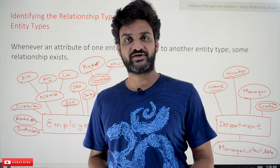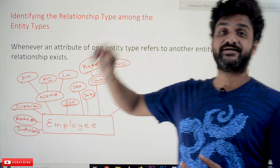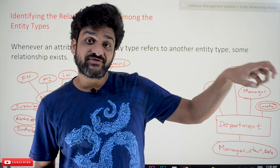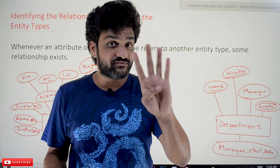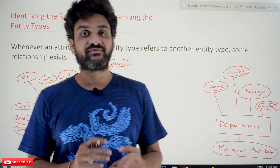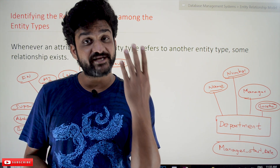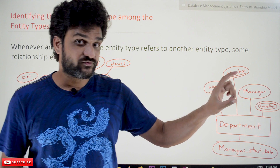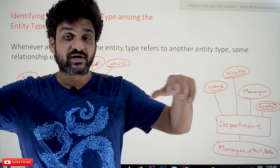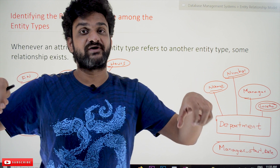Hi, welcome to Learning Monkey. I am Vikram. In this class we will try to identify the relationship type among the entity types. So far in our previous class, we have identified the different entity types from the requirements. The four different entity types that we have identified are employee, department, project, and dependent.